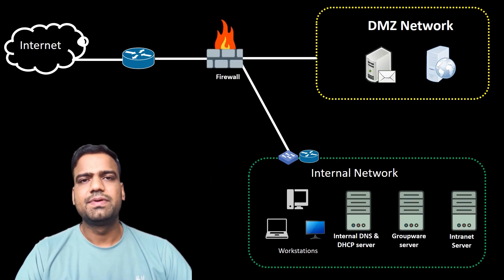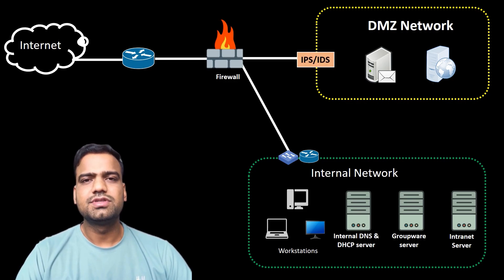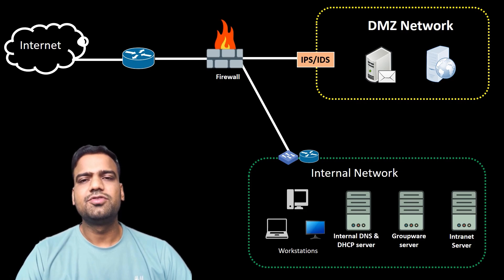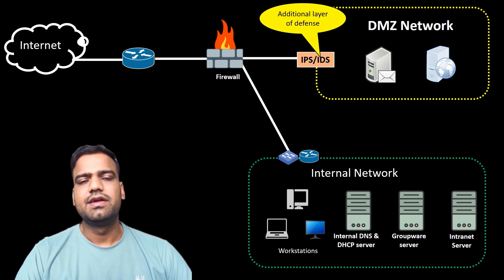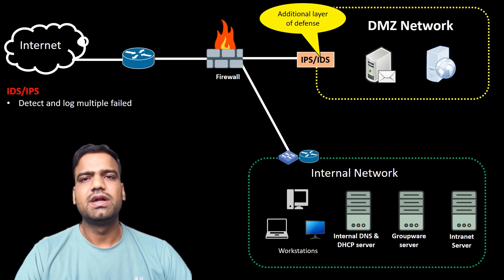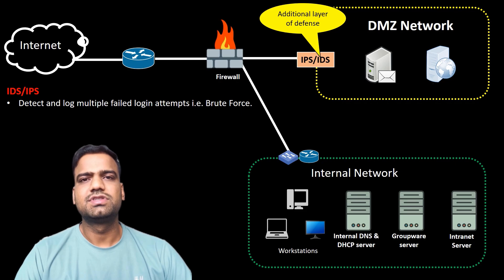IDS and IPS — that is, Intrusion Detection System and Intrusion Prevention System — are security measures in the DMZ designed to monitor, record, and potentially block suspicious activities, thus providing an additional layer of defense. For example, an Intrusion Detection System in the DMZ might detect and log multiple failed login attempts, signaling a potential brute force attack.